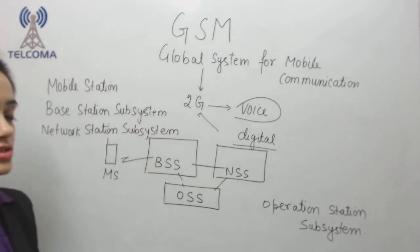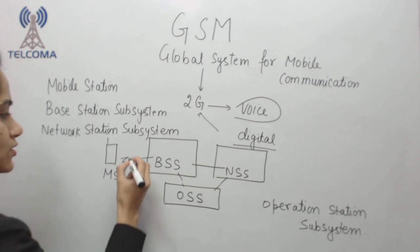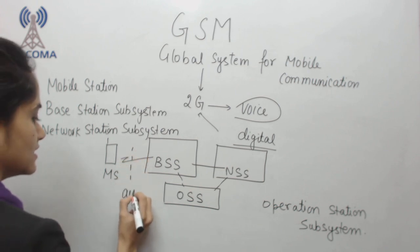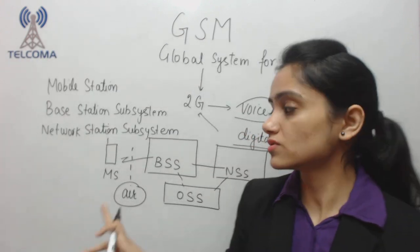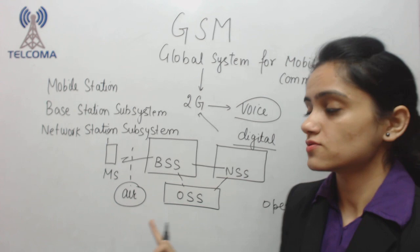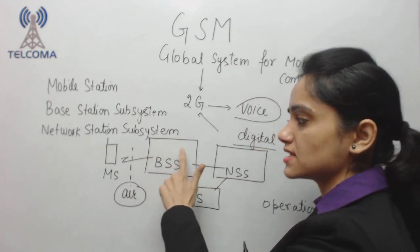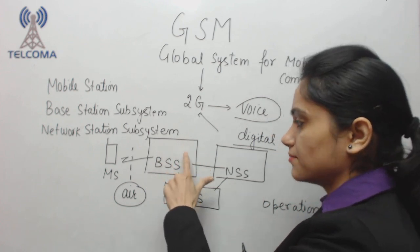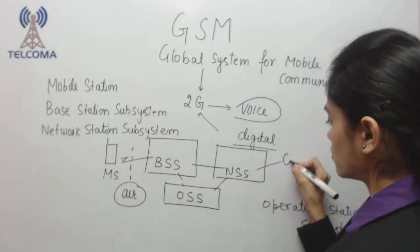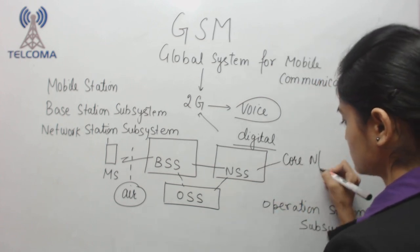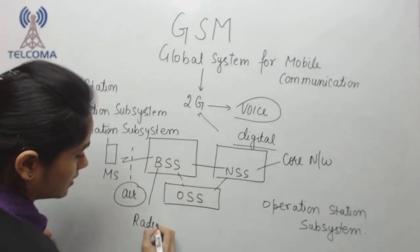GSM basic architecture comprises these four entities. Mobile Station is connected to BSS through an interface we call the air interface, because we require wireless communication. BSS is the Base Station Subsystem, followed by the Network Switching Subsystem, which we call the core network. The BSS part we call the radio network.